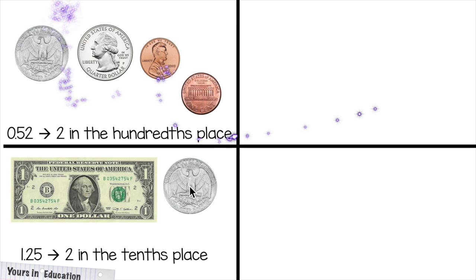Then we have one dollar and 25, this is the quarter. So ones, tenths, and hundredths. The number 2, the digit 2, is in the tenths place.